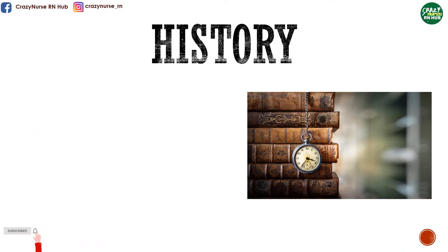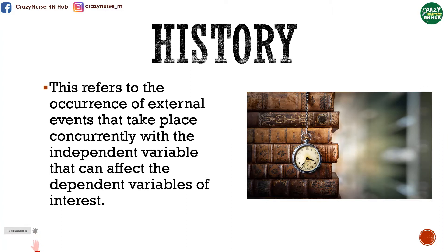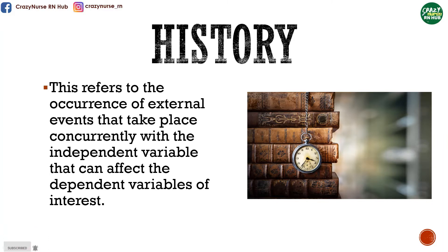First, let's have history. This refers to the occurrence of external events that take place concurrently with the independent variable that can affect the dependent variables of interest. For example, suppose you are studying the effect of a reproductive health program for pregnant women consisting of better nutrition and smoking cessation on infant birth weight. The resulting infant birth weight of your subjects might be affected by this program, and it becomes impossible to distinguish where the effects came from — your program or the television.